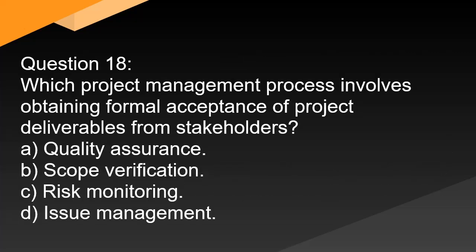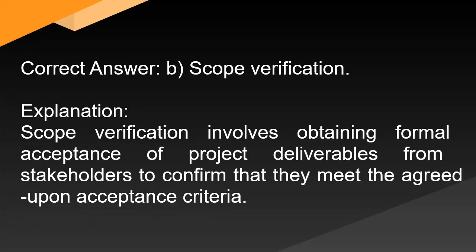Question 18: Which project management process involves obtaining formal acceptance of project deliverables from stakeholders? A. Quality assurance. B. Scope verification. C. Risk monitoring. D. Issue management. Correct answer: B. Scope verification. Explanation: Scope verification involves obtaining formal acceptance of project deliverables from stakeholders to confirm that they meet the agreed-upon acceptance criteria.